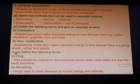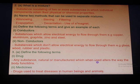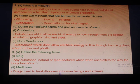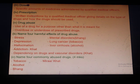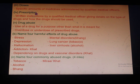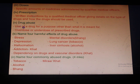Let's recall something about drugs and drug abuse. A drug is any substance, natural or manufactured, which when used alters the way the body functions. Medicines are drugs used to treat diseases in human beings and animals. Doses are specific amounts of medicines administered by qualified medical officers. Prescription is written instructions by a qualified medical officer giving details on the type of drug and how it should be used. Drug abuse is use of a drug for a purpose other than what it is meant for, and overdose and underdose of prescribed drugs also constitute drug abuse.